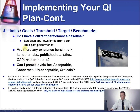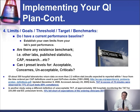The question you need to ask: do I have a current performance baseline? If you don't, you need to establish your own limit from your lab's past performance, or you can collect data. If you don't have anything at all, you can collect data for a month, maximum two months, then see where you are. If the turnaround time for stat tests from ER were at 70%, don't set your goal at 90% — make it 75%, then gradually increase.